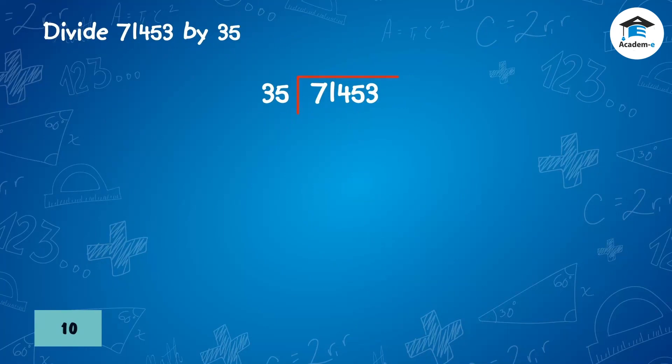Divide 71,453 by 35. Look at the ten-thousands digit: 7 is less than 35, so take 71. Divide 71 by 35 is 2. Multiply: 2 times 35 equals 70. Subtract: 71 minus 70 is 1. Bring down 4.